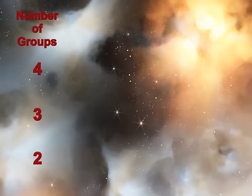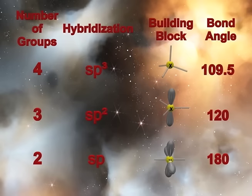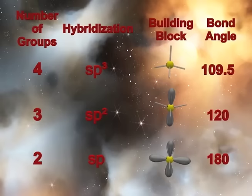An easy way to deduce hybridizations is to count groups around a central atom. A group is defined as another atom or a lone pair. When an atom is surrounded by 4, 3, or 2 groups, it will adopt the sp3, sp2, or sp hybridizations, respectively. A helpful way to remember this is by adding the exponents together — that should equal the number of groups around the hybridized atom. For sp3, the exponents add to 4, thus an sp3 atom has 4 groups. For sp2, the exponents add to 3, thus an sp2 hybridized atom has 3 groups around it. These hybridizations allow the respective number of groups to be as far apart as possible — think of it as all groups attempting to minimize electron repulsion.